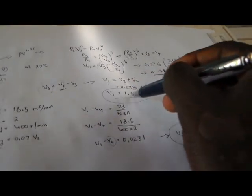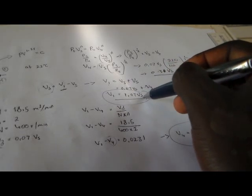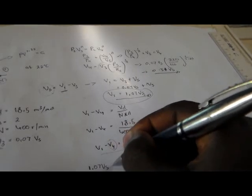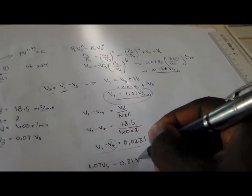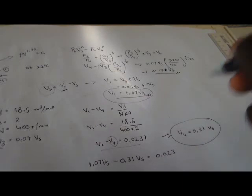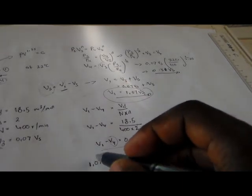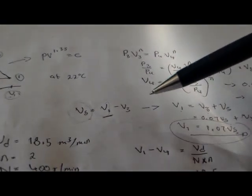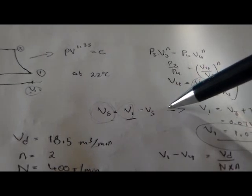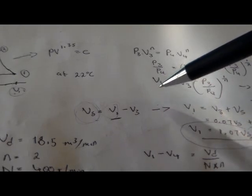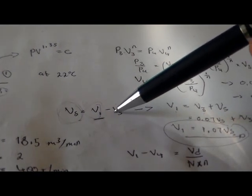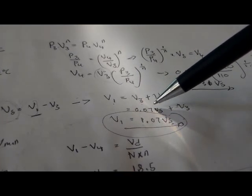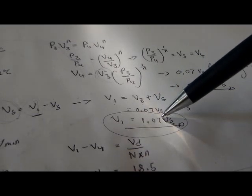Now we can substitute. V1 = 1.07·Vs and V4 = 0.31·Vs. The clearance volume is 0.07·Vs, which is 7% of the swept volume. We recapped that V1 was derived as 1.07·Vs by adding 0.07·Vs plus Vs. And V4 was obtained by expanding from V3 to V4 at the polytropic law.